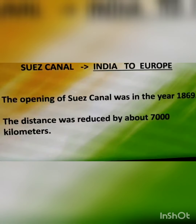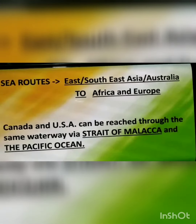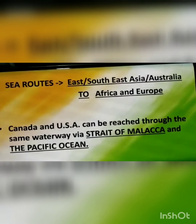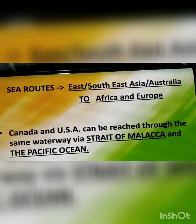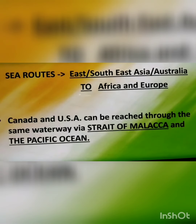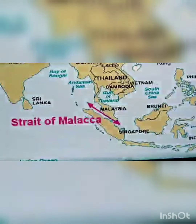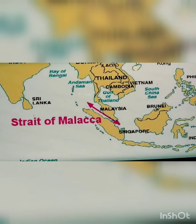Another sea route connects East and South East Asia and Australia to Africa and Europe. Canada and USA can be reached through Indian waterways via the Strait of Malacca and the Pacific Ocean. Here is a picture of the Strait of Malacca showing how this narrow passage of water was used for trading and transportation.